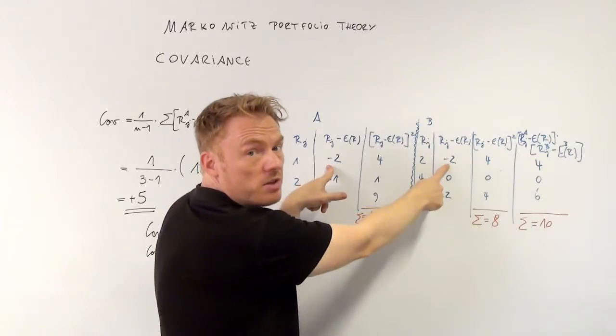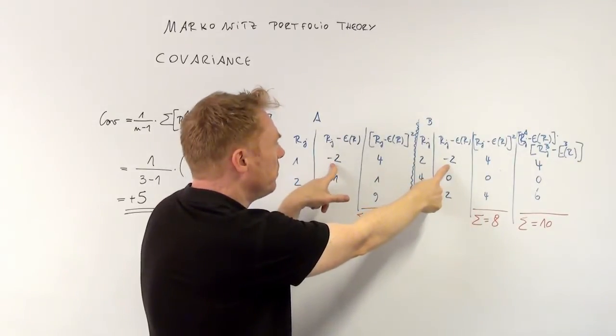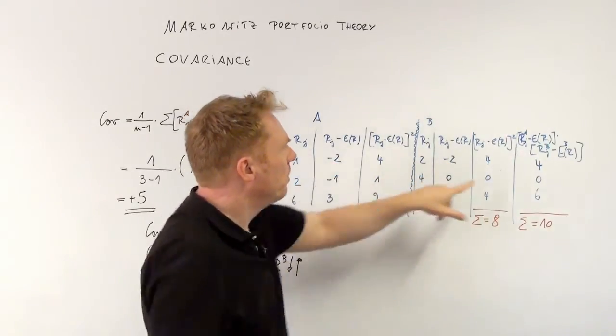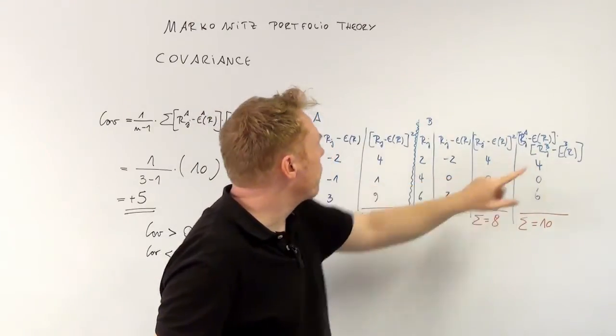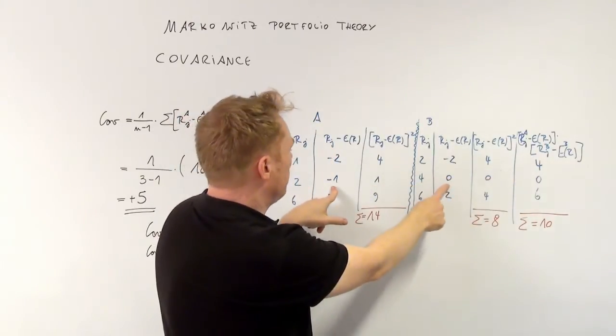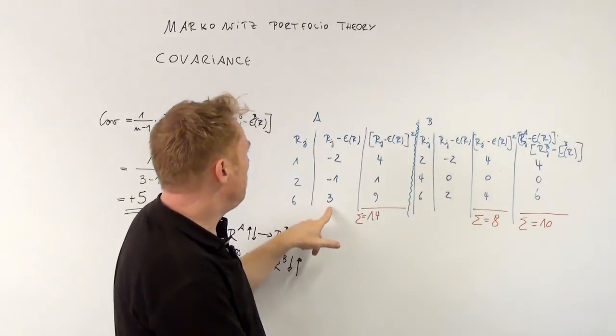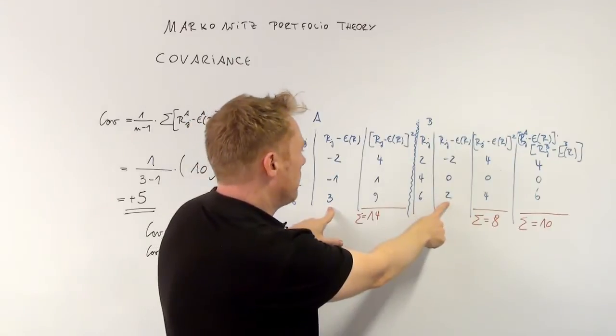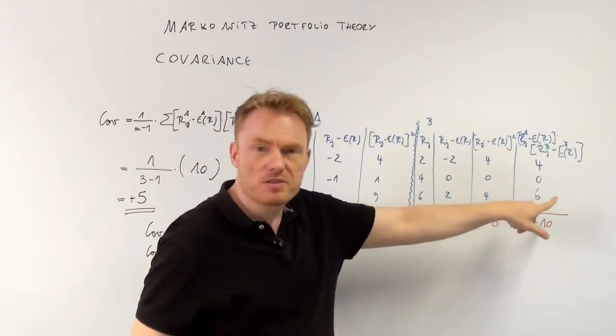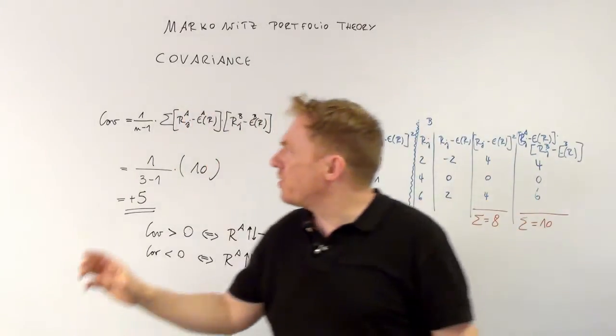Minus 2 times minus 2 is equal to 4. Minus 1 times 0 is 0. Plus 3 times plus 2 is equal to 6. So those are the products.